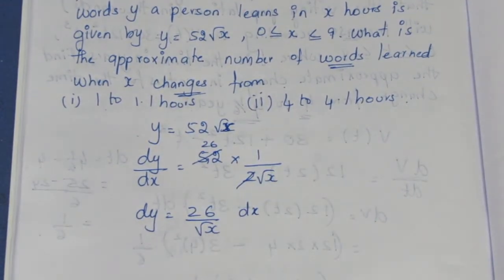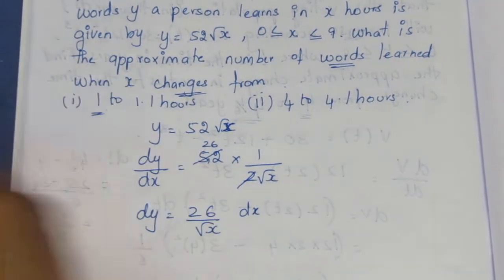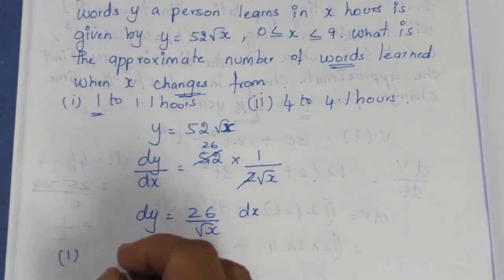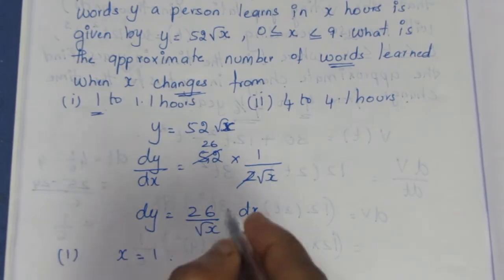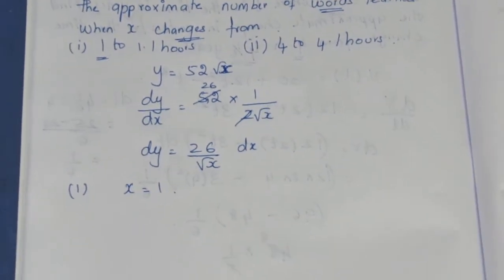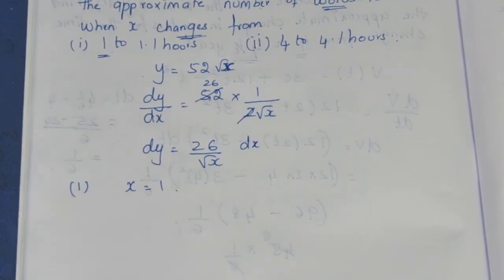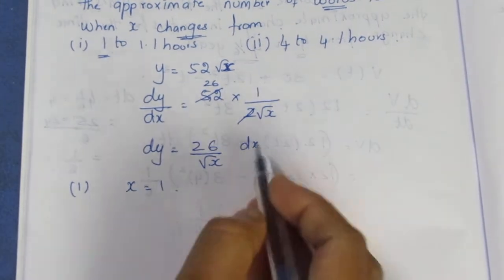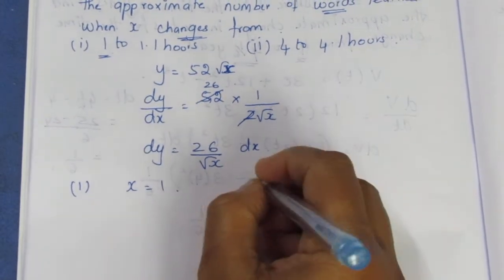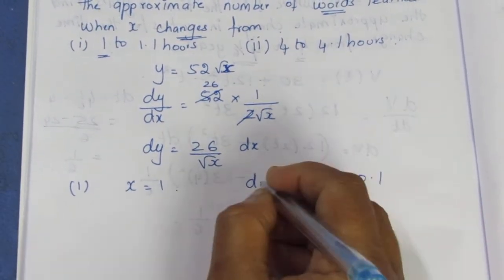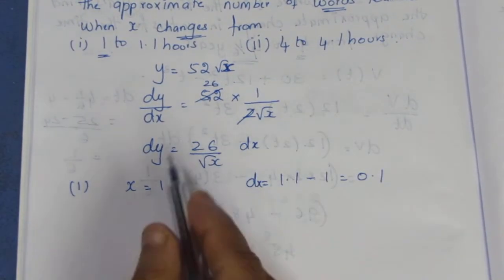For the first case, x = 1 and dx = 0.1, which is 1.1 - 1 = 0.1. Substituting: dy = (26/√1) × 0.1.